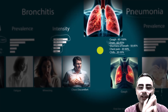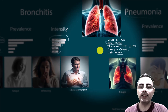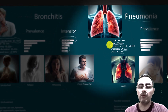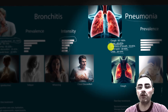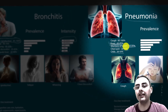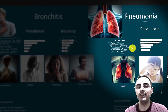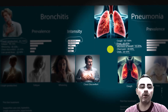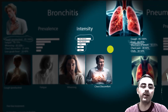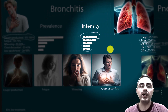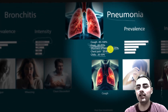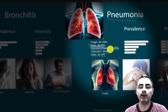To summarize: first, consider the intensity of symptoms. Fever is more common in pneumonia. Shortness of breath is more common in pneumonia, and its intensity is higher. Chills and chest pain are also more common in pneumonia, though chest discomfort can occur in bronchitis — the intensity is much higher in pneumonia.